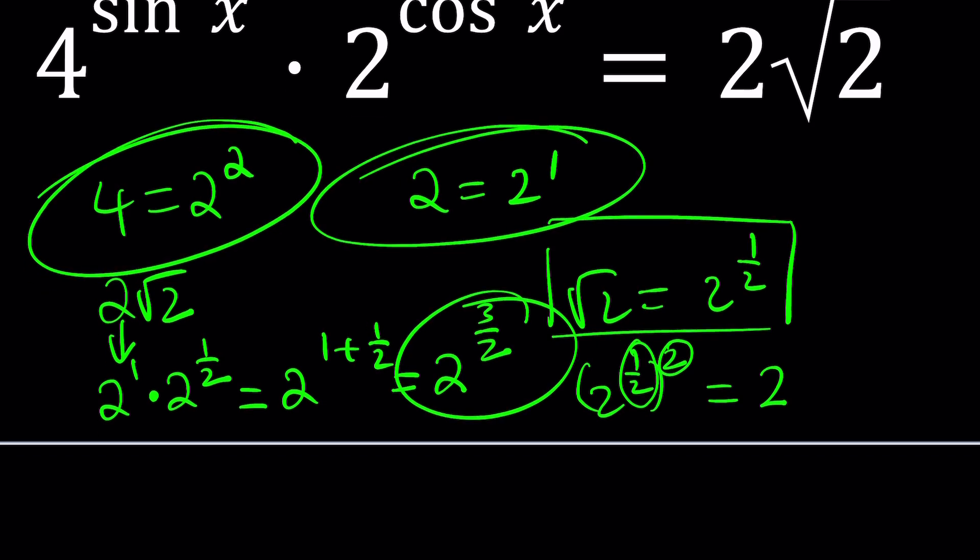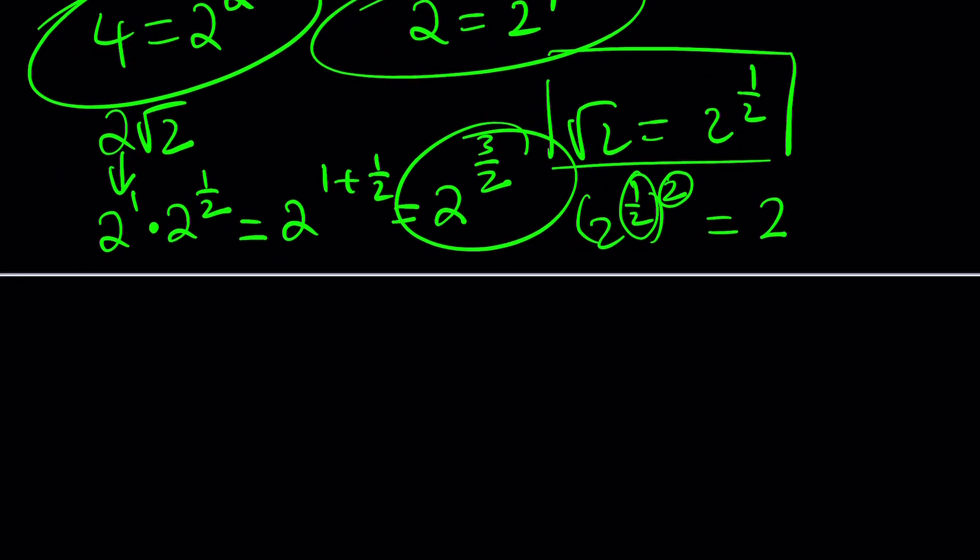Why not cook it, right? Let's go ahead and cook it up. So 4 will be replaced with 2 to the second power, and of course, we need to raise it to the power sine squared of x, right? Multiplied by 2 to the power cosine squared. Nothing is going to change there. On the right-hand side, 2 root 2 will be replaced with 2 to the power 3 halves, and now we're going to raise it to nothing because it's just by itself. So that's it, right? Okay, great.